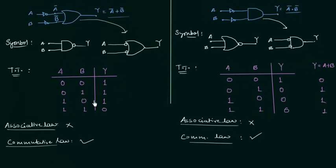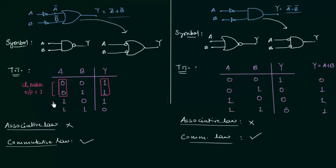Next point is enable and disable. I will use the truth table to find out enable and disable for NAND gate. For the first two cases where A is equal to 0, the output Y is fixed and equal to 1 — so 0 is disable for NAND gate with output equal to 1. For the last two cases where A is equal to 1, output Y is 1 when B is 0 and 0 when B is 1, so the output is not fixed but acting as an inverter. So 1 is enable and it acts as an inverter because B is complemented.